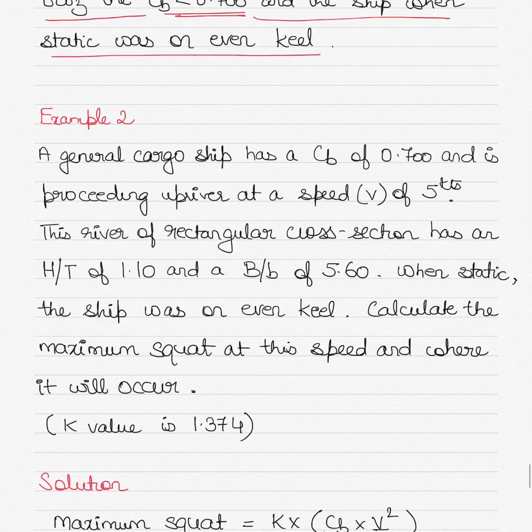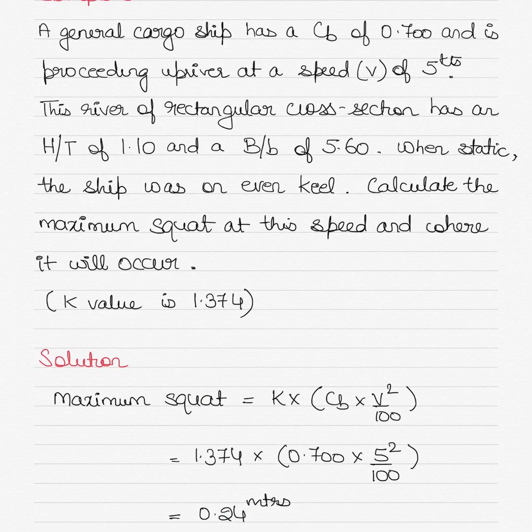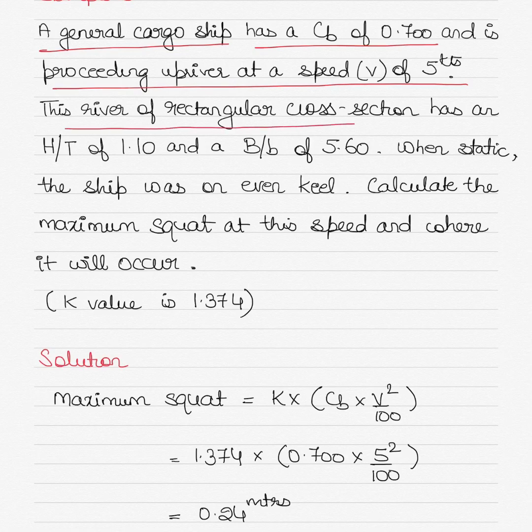So let's go into the second question. The second question says there is a general cargo ship this time which has a block coefficient of exactly 0.700 and it is proceeding upriver at a velocity or speed of 5 knots this time. This river of rectangular cross section has an H/T ratio of 1.1 and B/b ratio of 5.6. Now you know what all of these stand for.